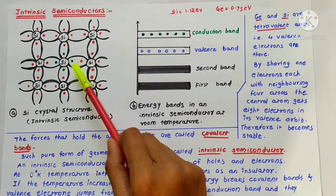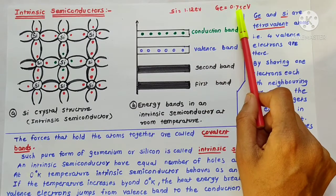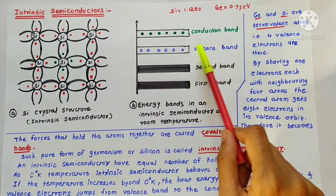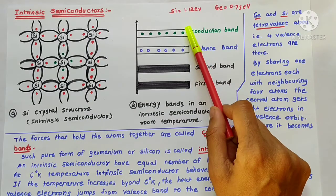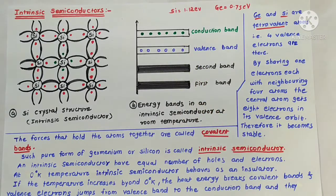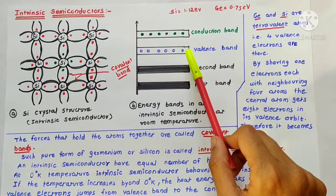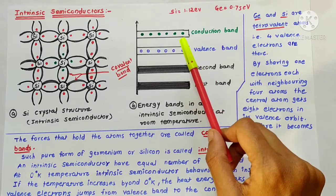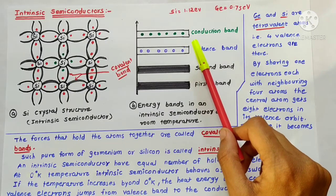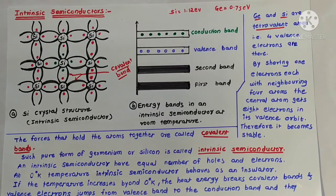The energy required to break this covalent bond is 1.12 electron volt for silicon and 0.75 electron volt for germanium. When an electron jumps from the valence band to the conduction band, it leaves an empty space called a hole. The formation of a hole and electron pair is simultaneous. The number of electrons and holes are equal. Such generation of electron-hole pairs is called thermal generation.